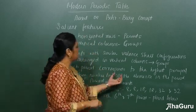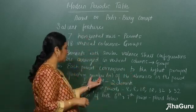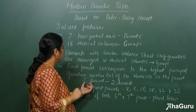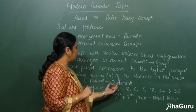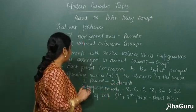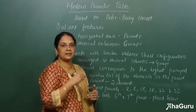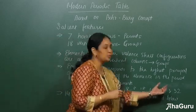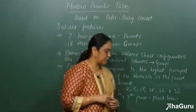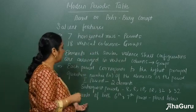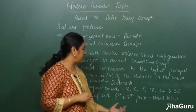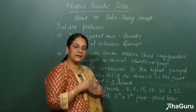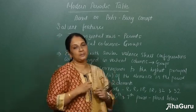Each period corresponds to the highest principal quantum number N of the elements in that period. The first period will have only two elements, and the subsequent periods — second, third, fourth — will have 8, 8, 18, 18, 32, and 32 elements each. The 14 elements of both the sixth and seventh period, that is the lanthanides and actinides, are placed separately below the periodic table.